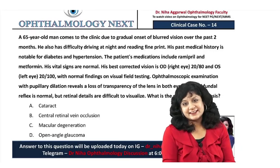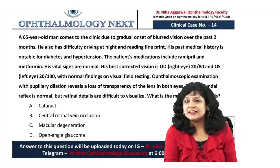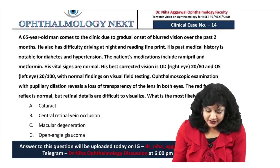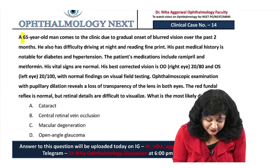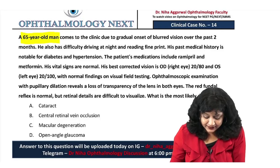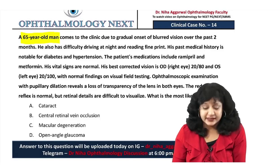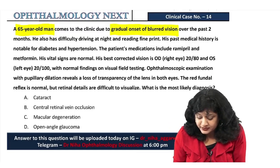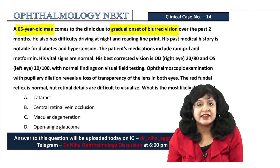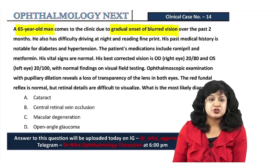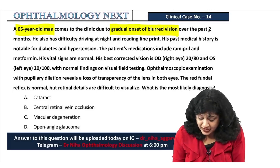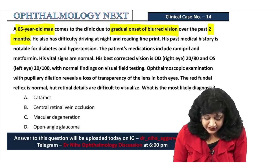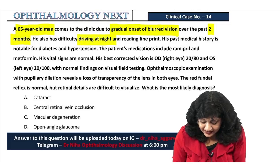Welcome to yet another session of clinical scenarios. This is case number 14. We have a 65-year-old man coming to the clinic with gradual onset of blurred vision — gradual diminution of vision over the past two months.